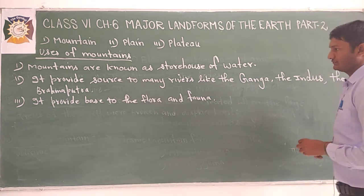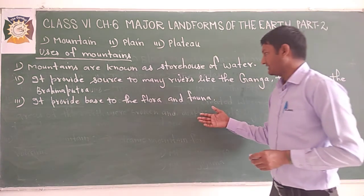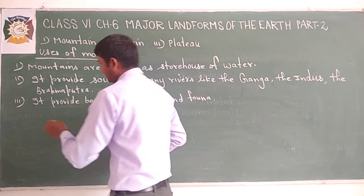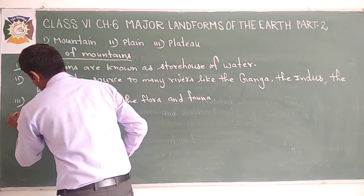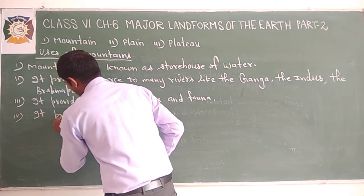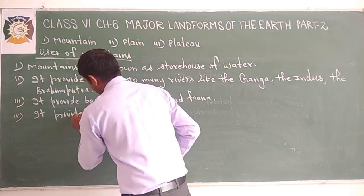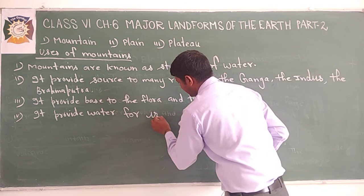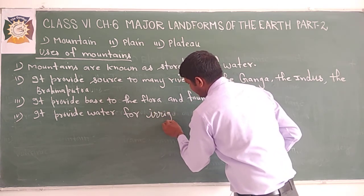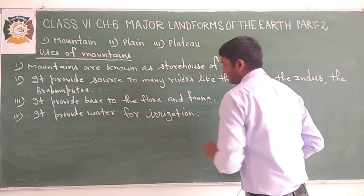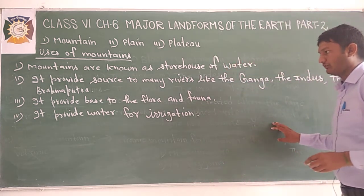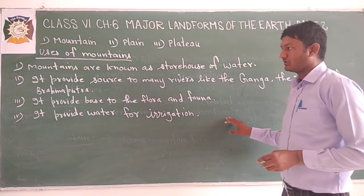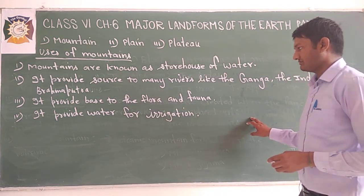Mountains are also the base for flora and fauna — meaning a number of animals as well as trees and plants. Mountains also provide water for irrigation. The Himalayan mountains are very helpful for irrigation in India, especially in Haryana, Punjab, Western Uttar Pradesh, Bihar, West Bengal, and Rajasthan.